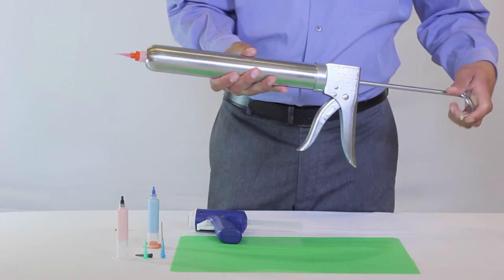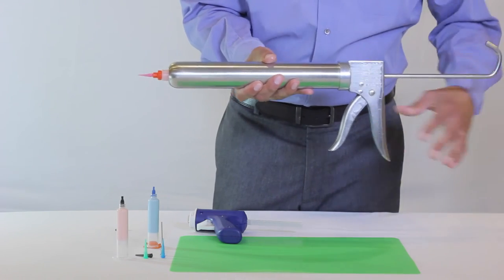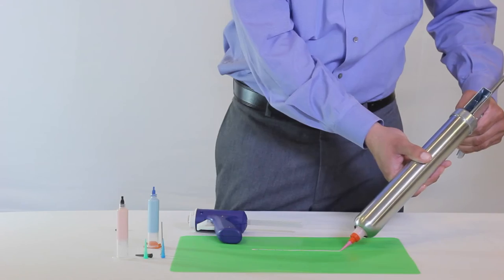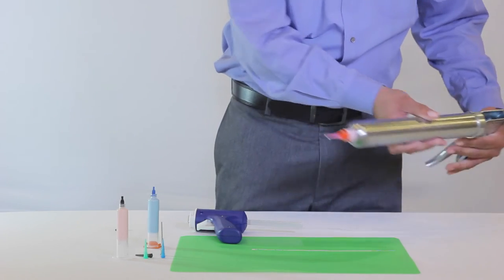To engage and lock the rod, twist the teeth into the down position. Now, simply press the trigger to manually dispense like so.